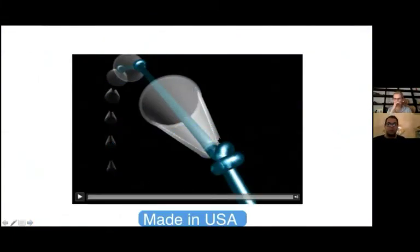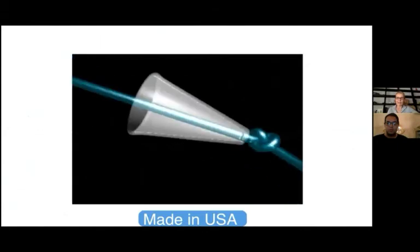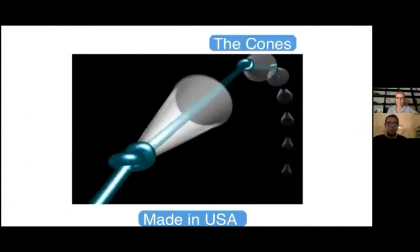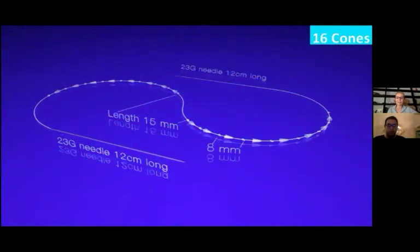Now we are speaking about the polylactic acid threads — Silhouette Soft — made in the United States. We have three kinds of sutures: 8 cones, 12 cones, and 16 cones. The needle is always a 23-gauge needle and is 12 centimeters long. The distance between cones is 1.5 millimeters and is the same for all threads. The only difference is spacing: 8 millimeters for 16 cones, 8 millimeters for 12 cones, and only 5 millimeters for 8 cones.